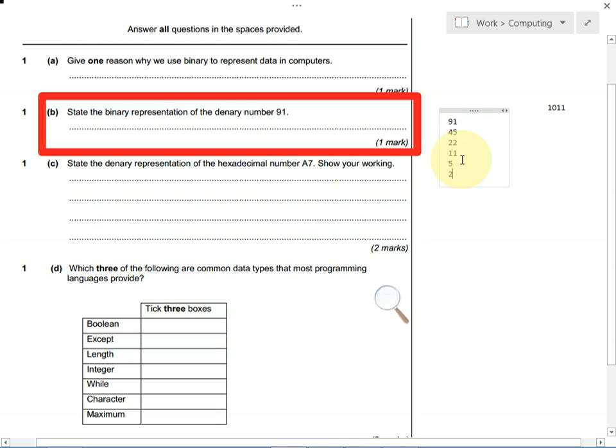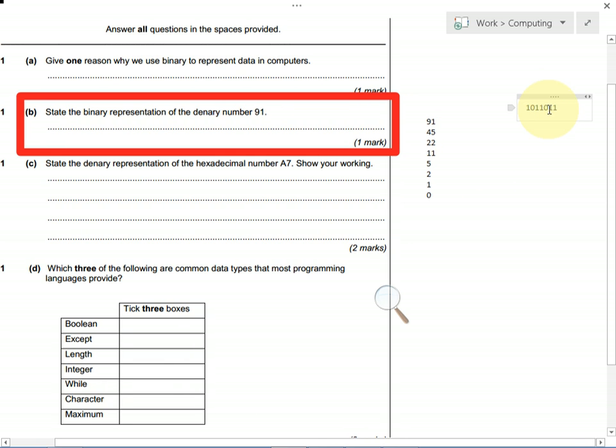5 divided by 2 is 2 and a half, again we ignore the half, but because there was a half, we put a 1 as the next digit. 2 divided by 2 is 1, which goes perfectly, so we put a 0 as our next digit. 1 divided by 2 is a half, or 0.5, so we ignore the half, but we put a 1 up here.